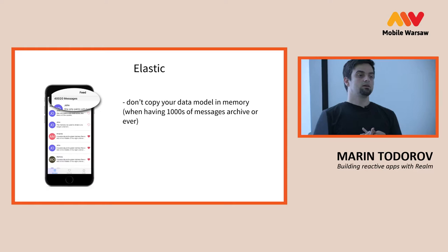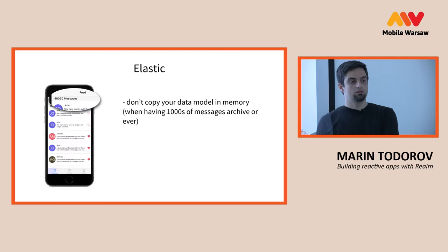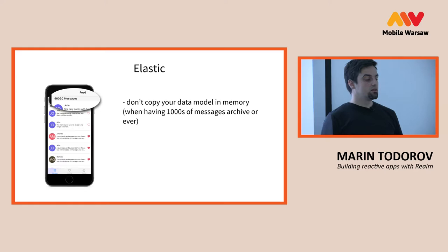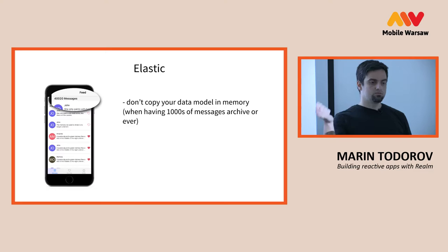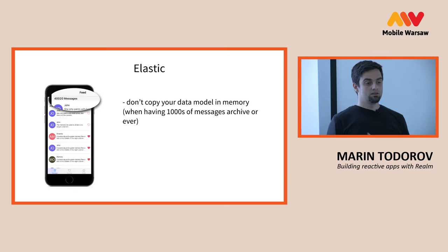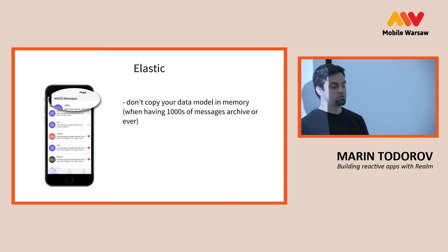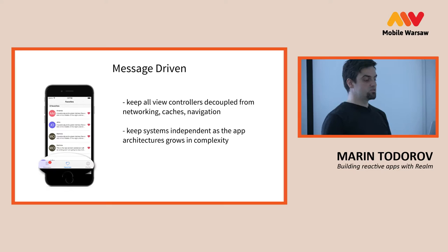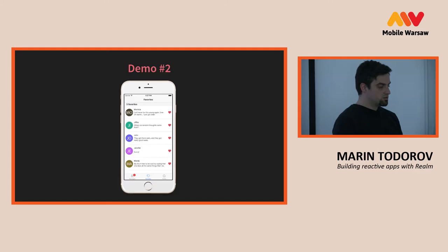Realm helps you keep your app elastic because you don't copy your whole model from disk into memory. I've seen people load data into an array — that's fine if you have 50 objects, but with 10,000 you get a memory warning and you're done. Realm helps you not have more data in memory than you actually need at a given moment. And for message-driven: we saw there are focused notifications. It's pretty good.